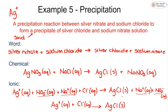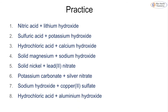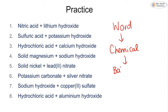That covers all the examples for ionic equations. There are practice questions available covering various types of reactions, where you should write the word equation, convert to a chemical equation, balance it, and then write the ionic equation. In an exam you may only be asked for specific steps, but make sure you can go from the word equation to the balanced chemical equation and then to the ionic equation, focusing only on substances with the state symbol aq.